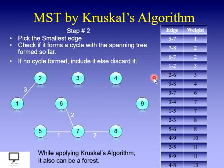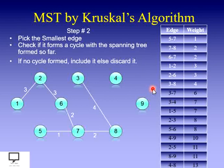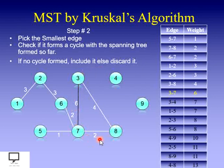Moving forward to the next edge: 3–8 with weight 4 — not forming any cycle, so include it. Next edge is 3–7. Checking: connecting 3 and 7 would form a cycle, so we skip this edge and do not include it in our MST.